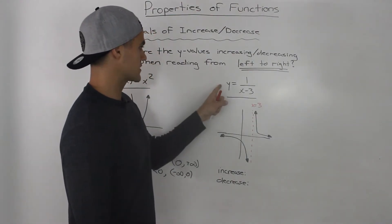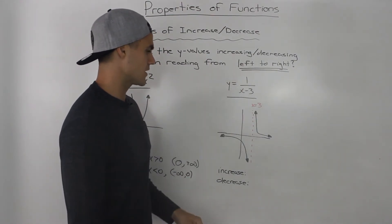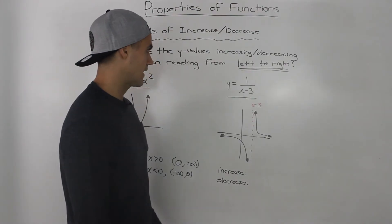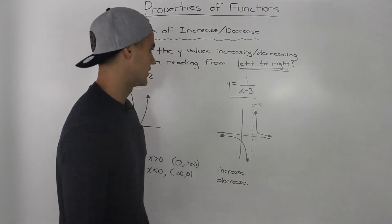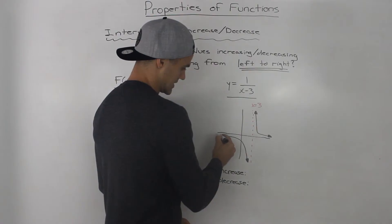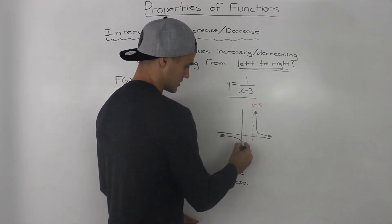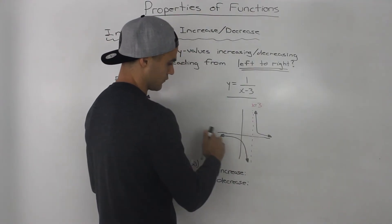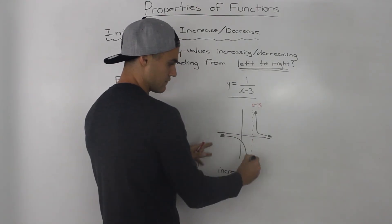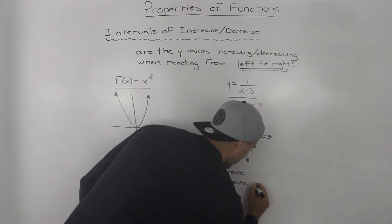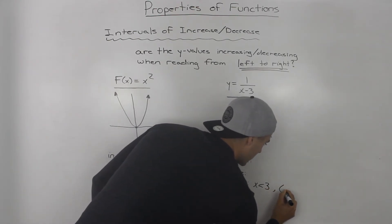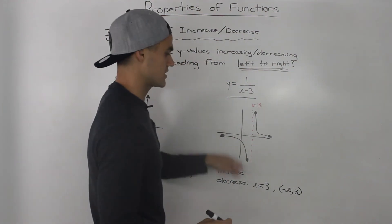Let's do another example. We have the function y equals one over x minus three, graphed here. At an x value of three, there is a vertical asymptote. Let's figure out the intervals of increase and decrease. Reading from left to right, notice how the y values are getting smaller for this portion of the graph. So from negative infinity to an x value of three, the function is decreasing — when x is less than three, or in interval notation, from negative infinity to three.